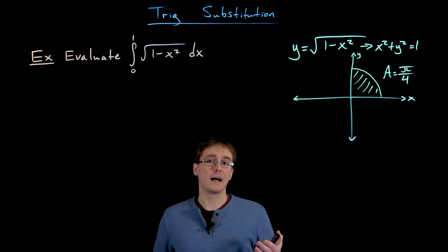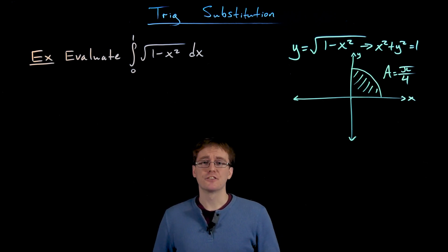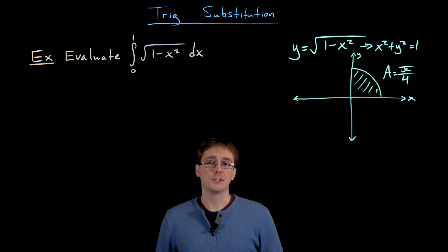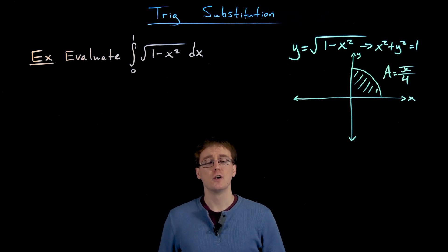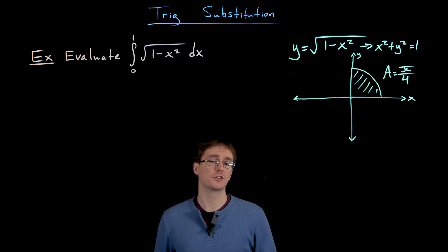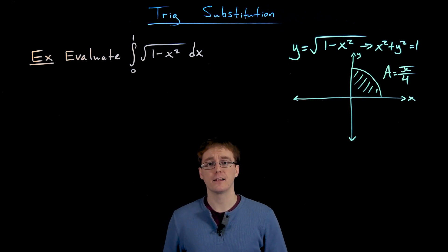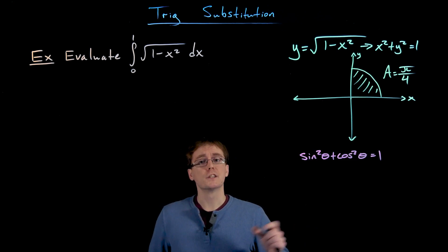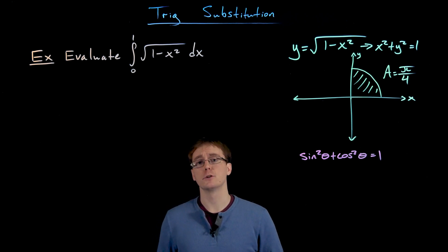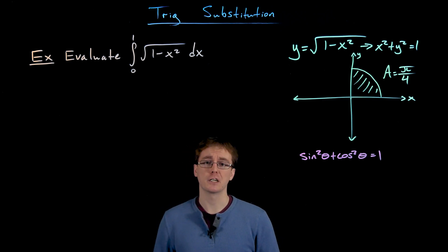The way we derive the equation for our unit circle is using the distance formula, which is an application of the Pythagorean theorem. Another useful application related to our trig functions is the Pythagorean identity: sine squared of theta plus cosine squared of theta is always equal to 1. This Pythagorean identity, as well as the other two versions, are really going to be the keys behind this method of trigonometric substitution.